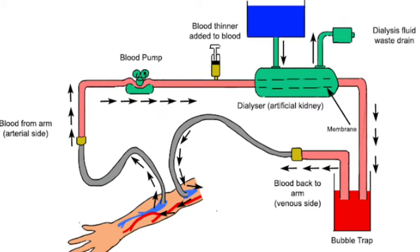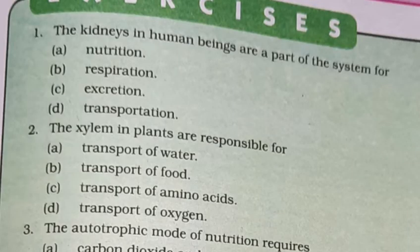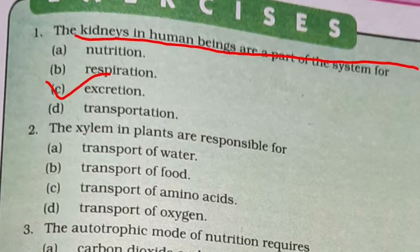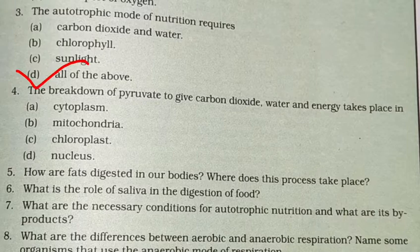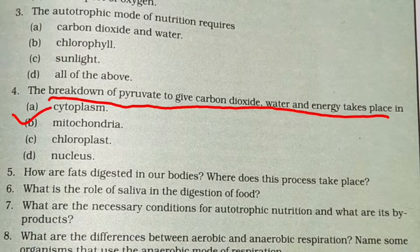So this was the last topic of our chapter. Ab kuch exercise questions hain. Pahla question: kidney in human beings are part of system for — option C, excretion. The xylem in plants is responsible for transport of water. The autotrophic mode of nutrition requires all of the above — carbon dioxide, water, chlorophyll, sunlight. The breakdown of pyruvate to give carbon dioxide, water and energy takes place in mitochondria — so second option, mitochondria, is correct.